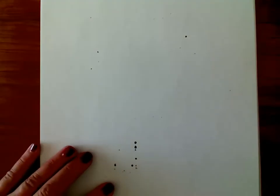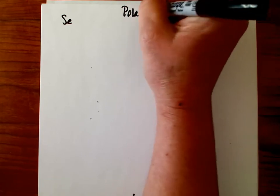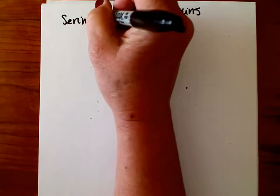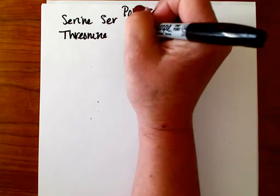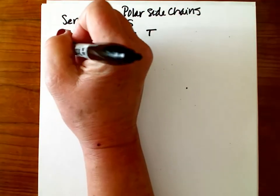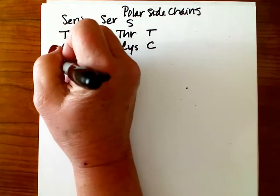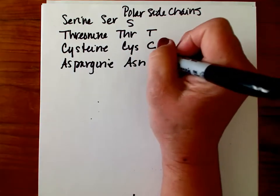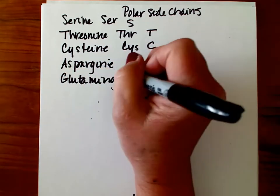Now we're going to look at amino acids with polar side chains. We have serine (SER, S), threonine (THR, T), cysteine (CYS, C), asparagine (ASN, N — the N reminds you it contains a nitrogen), and glutamine (GLN, Q — the N again for nitrogen).